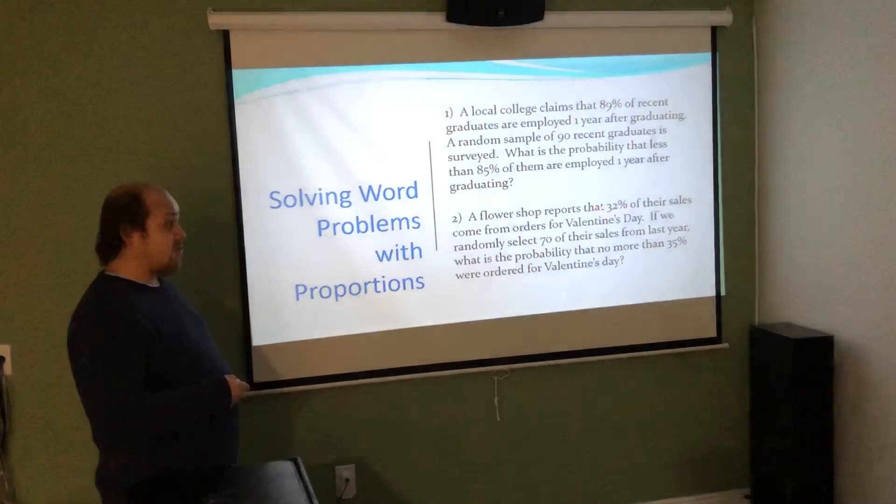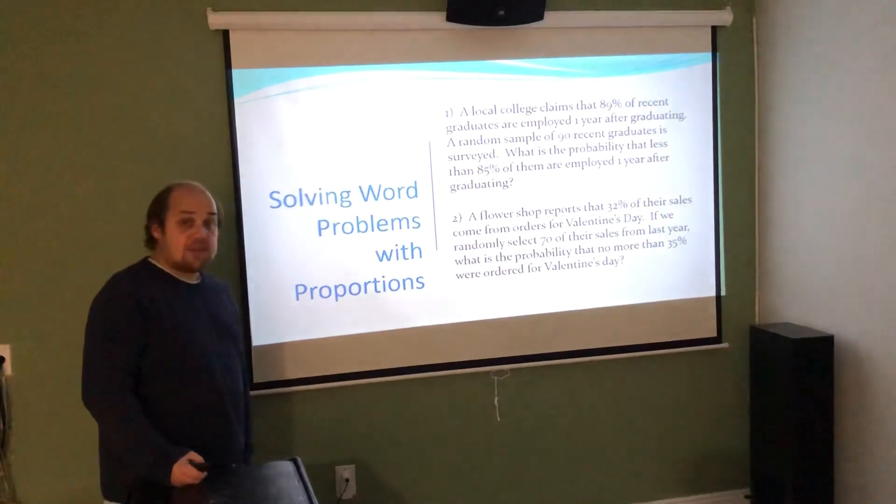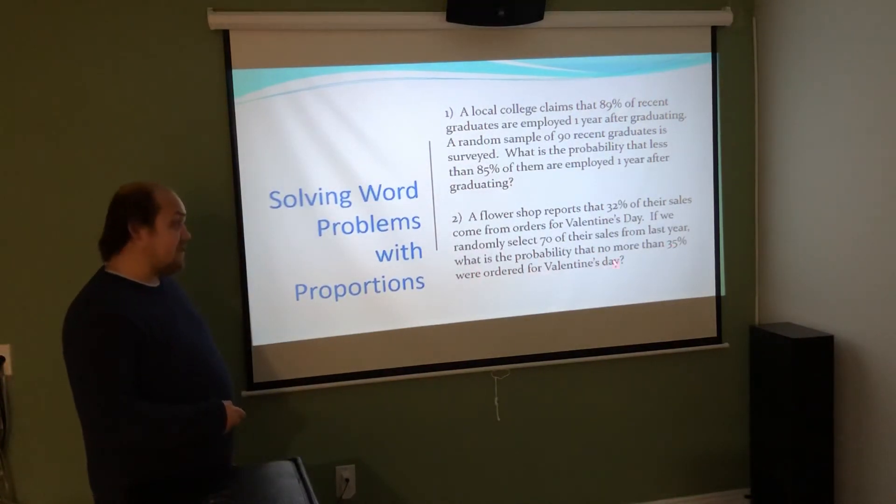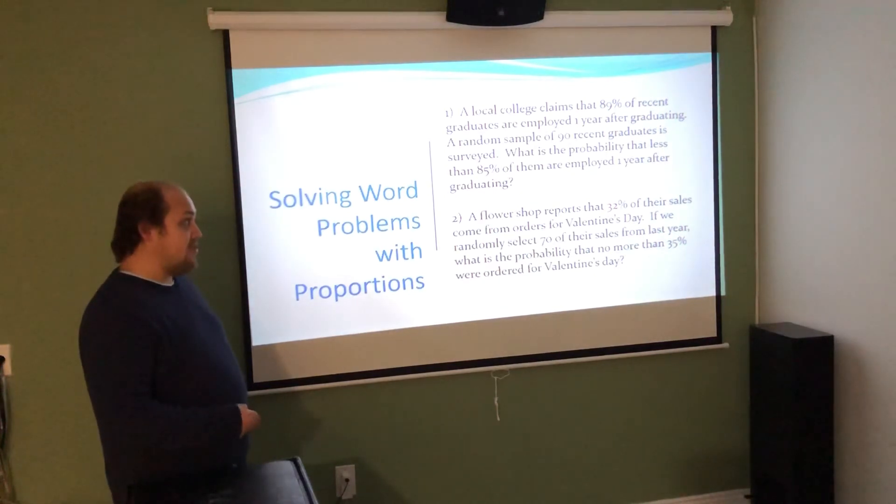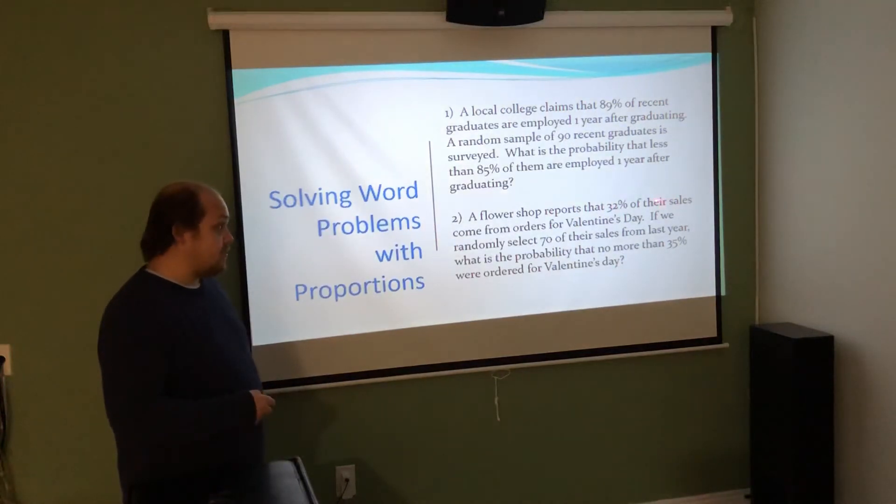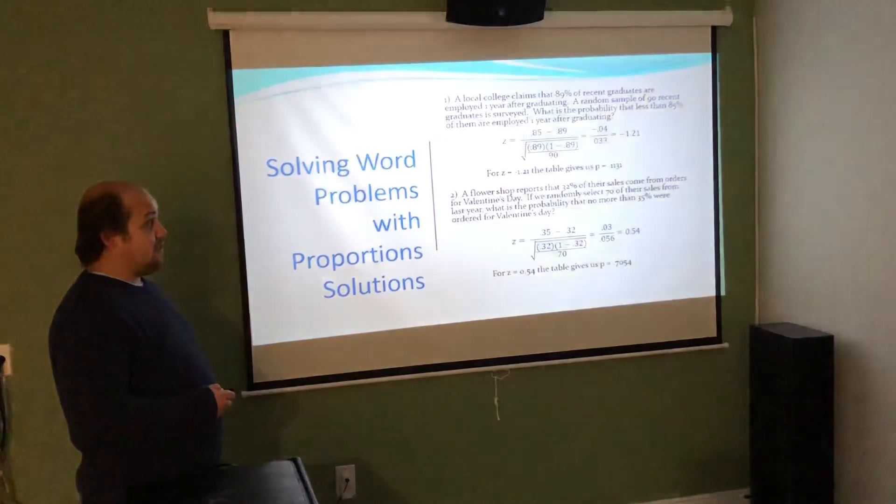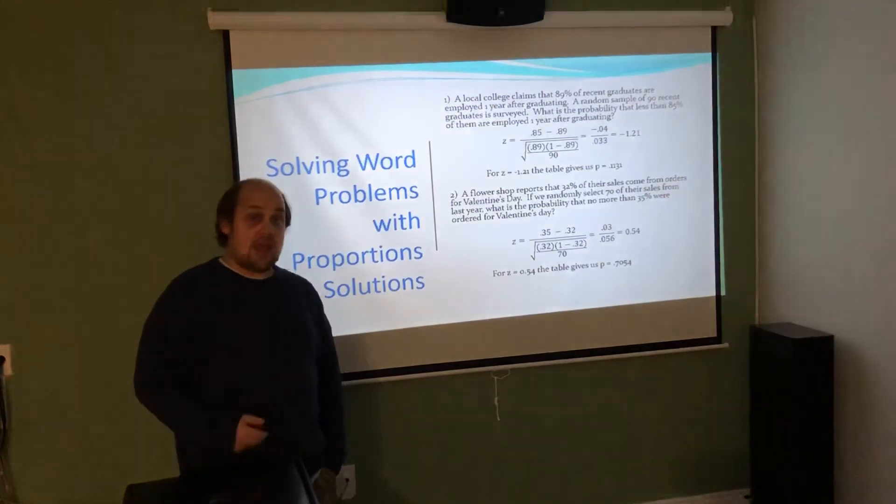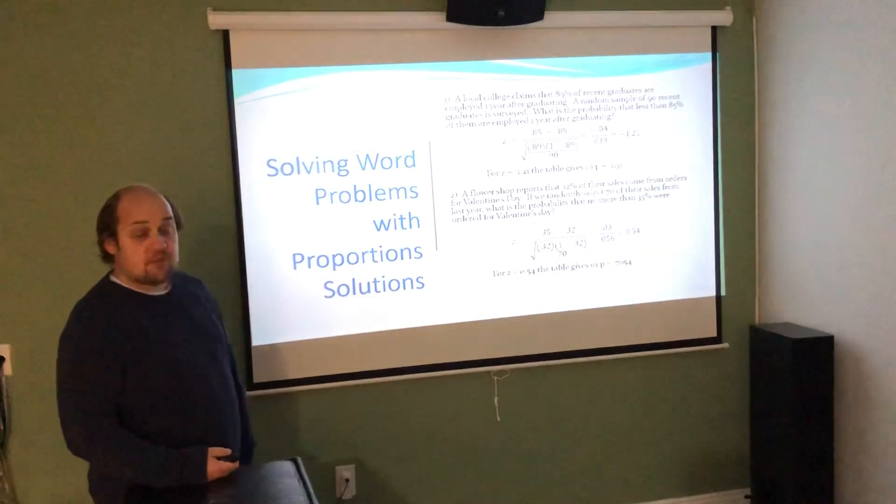For number two with the flower shop, we're using 32% as p, what they're reporting as what proportion of their sales come from Valentine's Day. If we randomly select 70 of their sales from last year, that's going to be our N when we calculate on the bottom of the z-score formula, the sigma sub p hat. No more than 35% were ordered for Valentine's Day is going to be our p hat that we put into the problem. So 0.35 minus 0.32 over the root of 0.32(1-0.32) over 70. For the first problem, we end up with negative 0.04 over 0.033, which is a z-score of negative 1.21. I look up negative 1.21 in the table, which points to p equals 0.1131, so the correct answer is 0.1131. For the second problem, we get a z-score of 0.54, which points us to a p value of 0.7054.